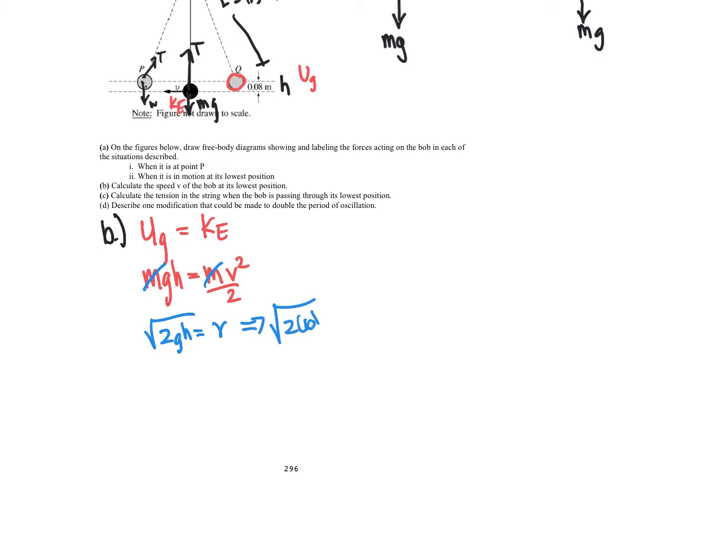So plugging in things, we get 2, and we use 10 as gravity times 0.08, which is my height component. So now we just plug that in, and we get approximately 1.26 meters per second.